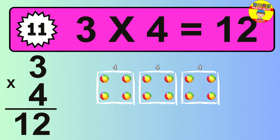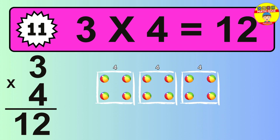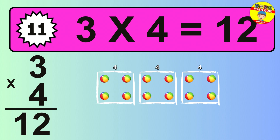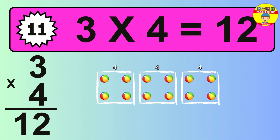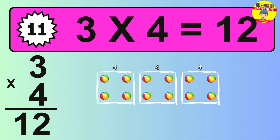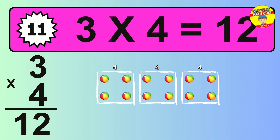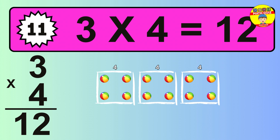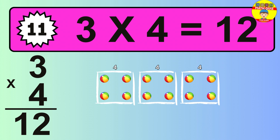The answer is 3 times 4 is 12. To calculate, we have 3 groups with 4 balls each one. So, how many balls do we have? 12 balls.